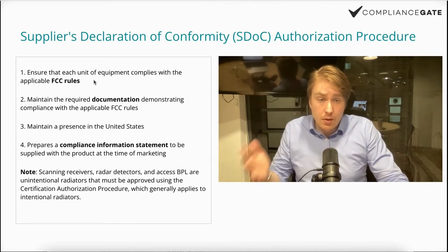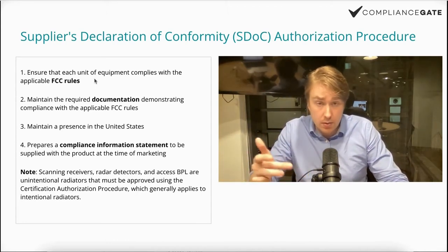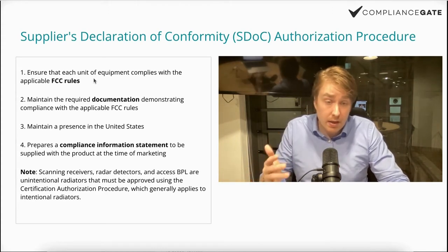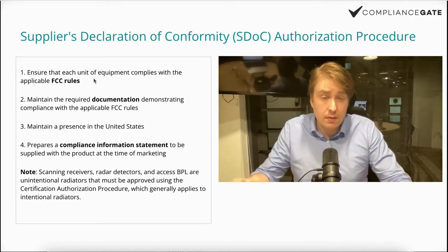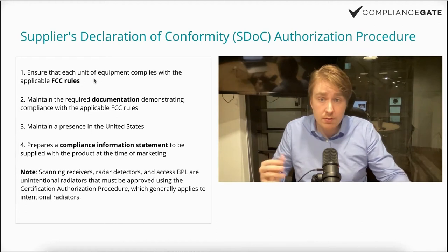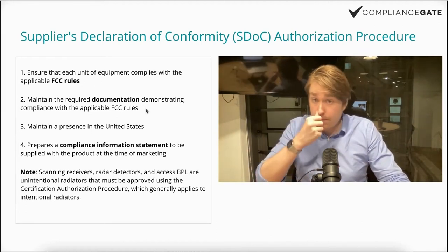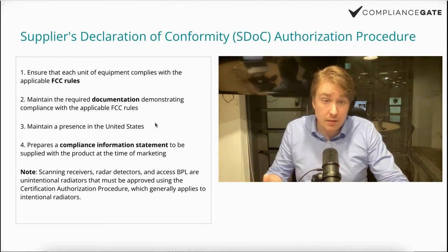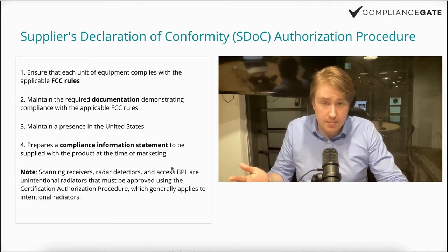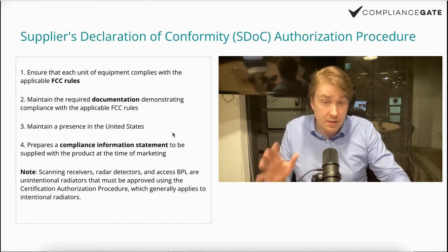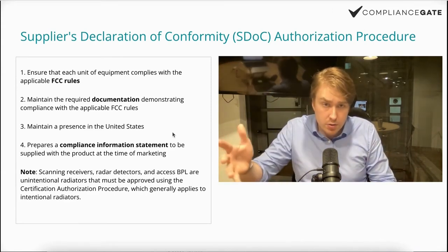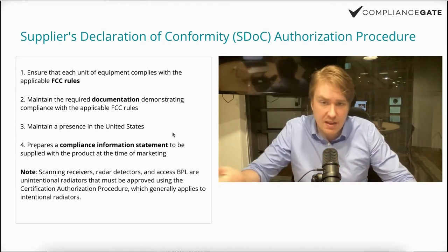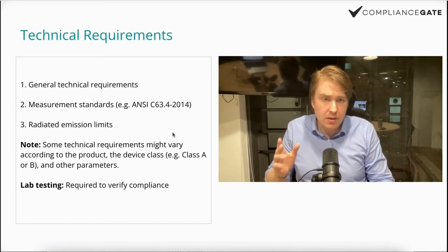For starters, the unintentional radiator — say this microphone — has to comply with the applicable FCC rules. At the very core of product compliance we generally have technical requirements. Second, you need to maintain the required documentation that demonstrates compliance with the FCC rules and maintain a US presence. You also need to prepare a compliance information statement. There are some exceptions — scanning receivers, radar detectors — but in short, for an unintentional radiator you follow the SDOC procedure unless it falls into those exception categories.